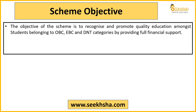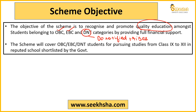Let us start with the important points of this scheme. The scheme's objective is to promote quality education among students of a particular group. The groups covered are OBC (Other Backward Class), EBC (Economically Backward Class), and DNT (Denotified Tribes). So this scheme covers OBC, EBC, and DNT categories and provides them financial support for quality education.